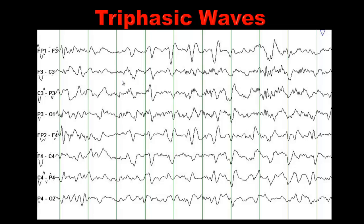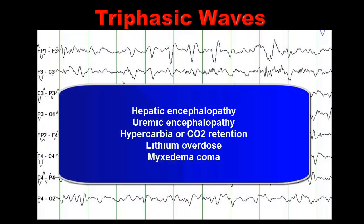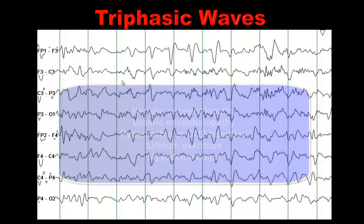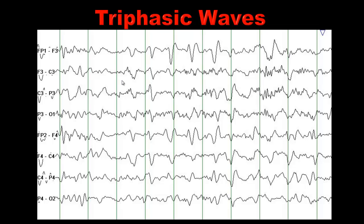Triphasic waves can be seen in a number of encephalopathies — the common ones being hepatic encephalopathy, uremia, CO2 retention, and sometimes lithium toxicity. You can even see triphasic waves as part of an electrographic seizure, but what you need to differentiate is whether this is more of a metabolic encephalopathy or someone in non-convulsive status epilepticus. With experience you will be able to differentiate one from the other, so go and read through the books about triphasic waves.